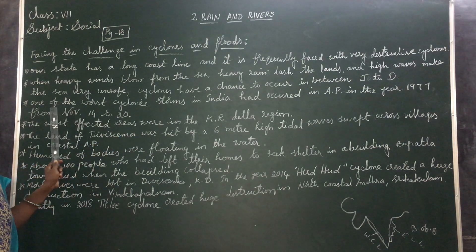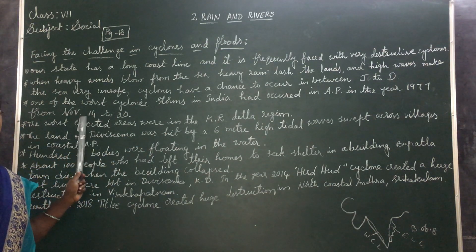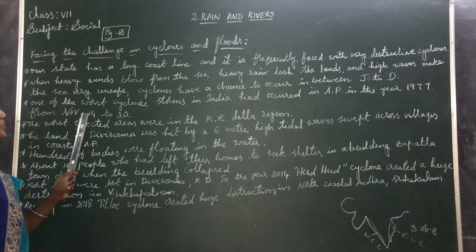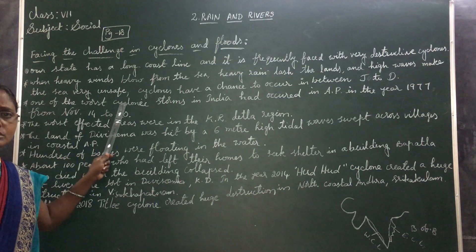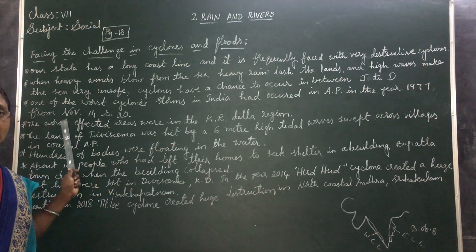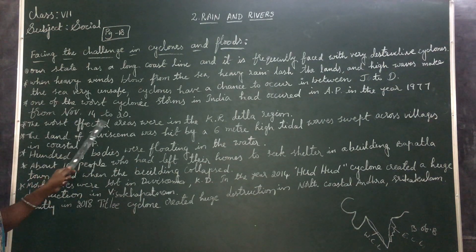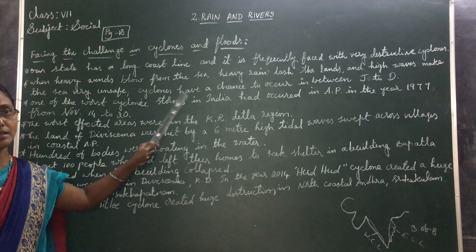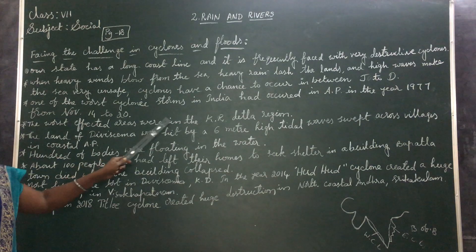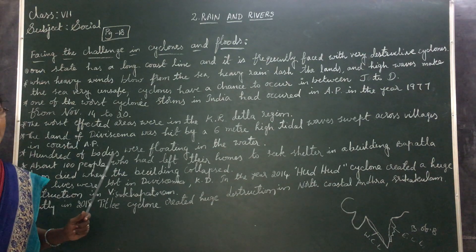One of the worst cyclones in India occurred in the year 1977, in the month of November 14 to 20. The worst affected areas were in the Krishna Delta region. Because of this worst cyclone, the most destructive area was the Krishna Delta region.